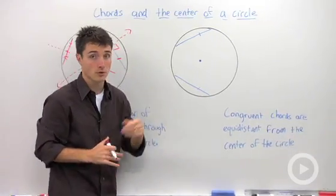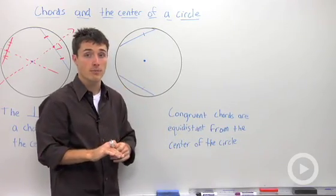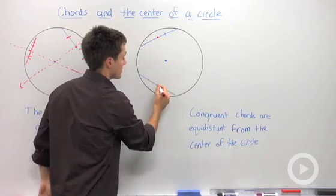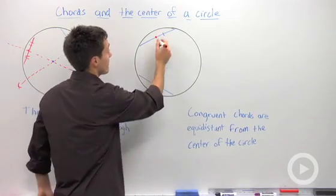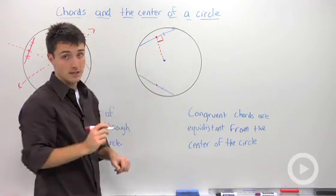Let's talk about two congruent chords. So this is kind of a converse of what we just talked about. If I found the perpendicular bisector of these chords, so if I measured the perpendicular distance from the chord to the center.